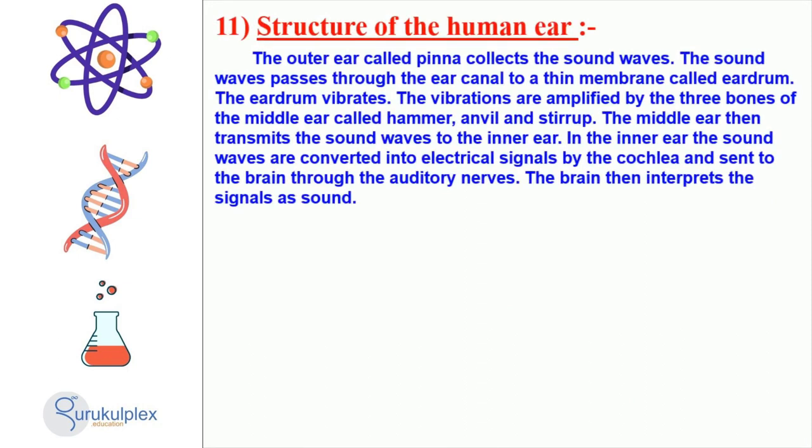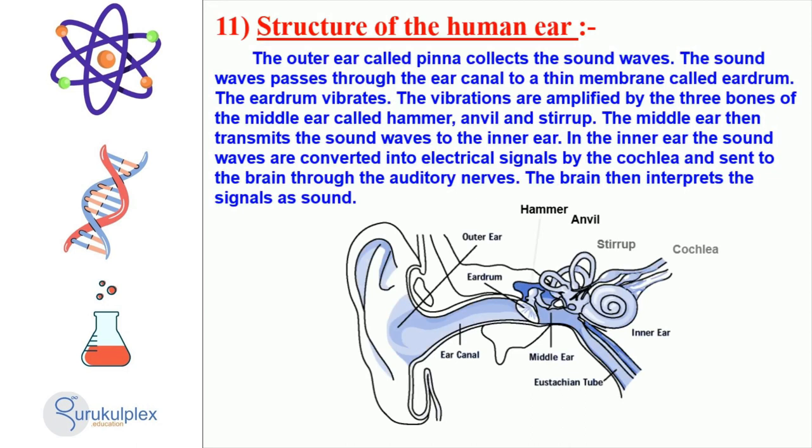Humans have a complex and amazing ear. The outer ear, or pinna, collects sound waves. These waves enter the ear canal and vibrate the eardrum, a thin membrane. The three bones of the middle ear, the hammer, anvil, and stirrup, amplify the vibrations.